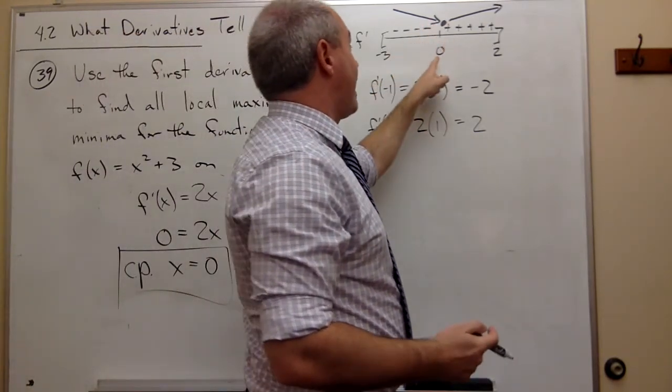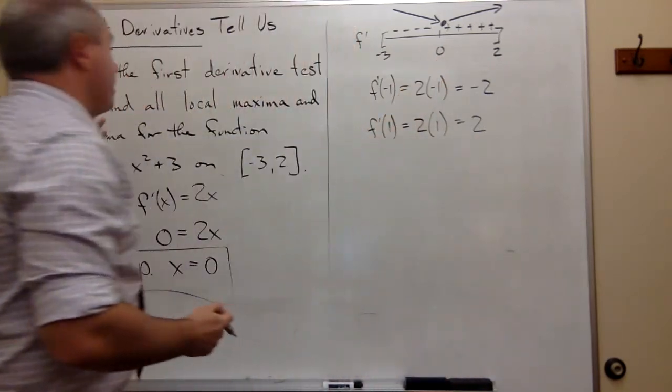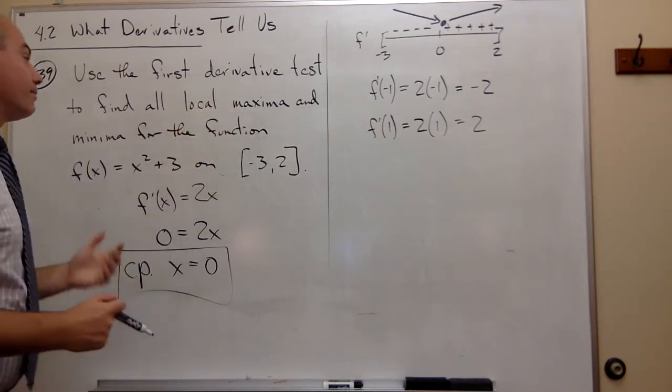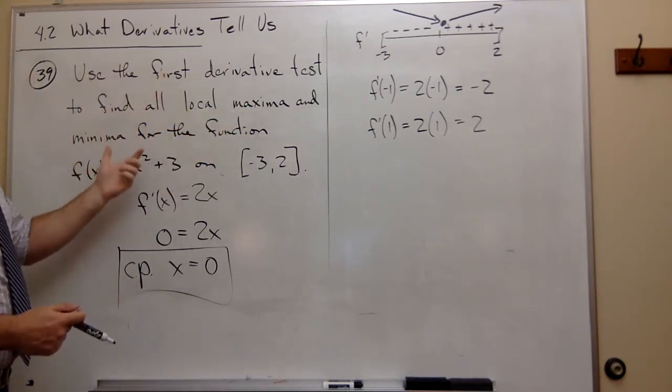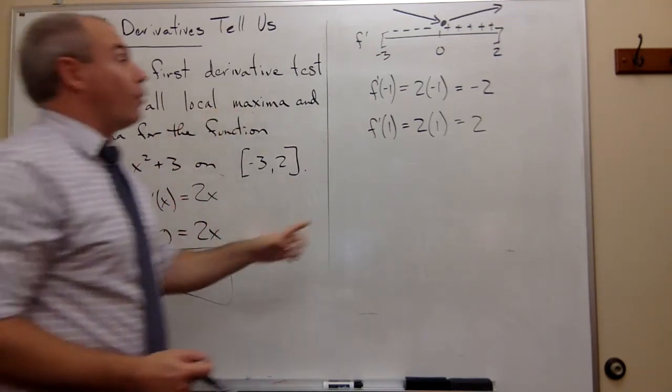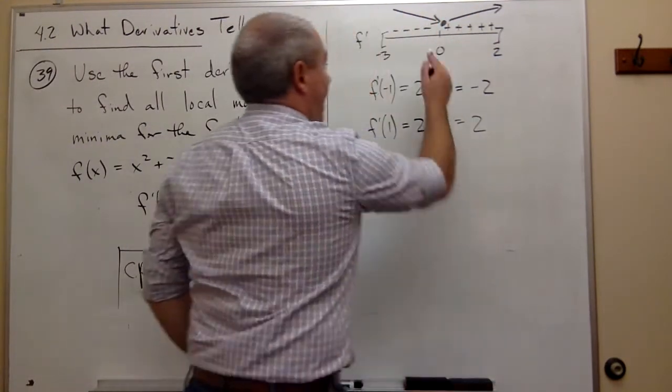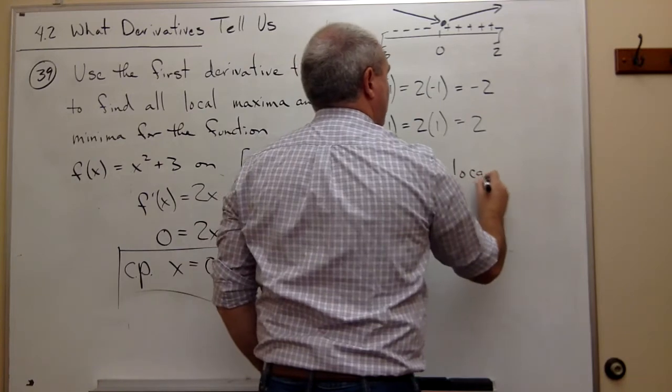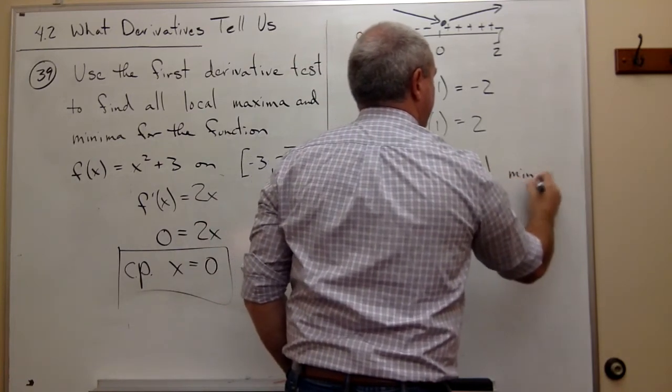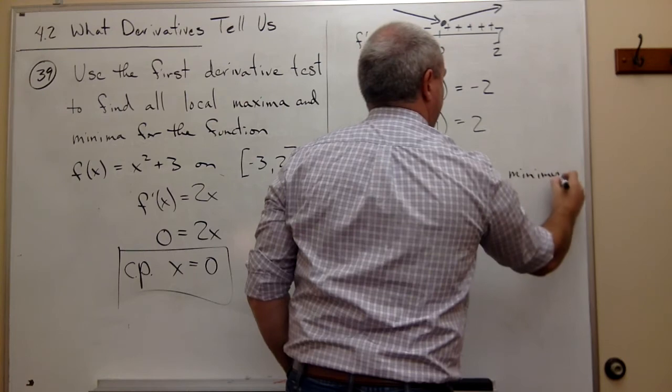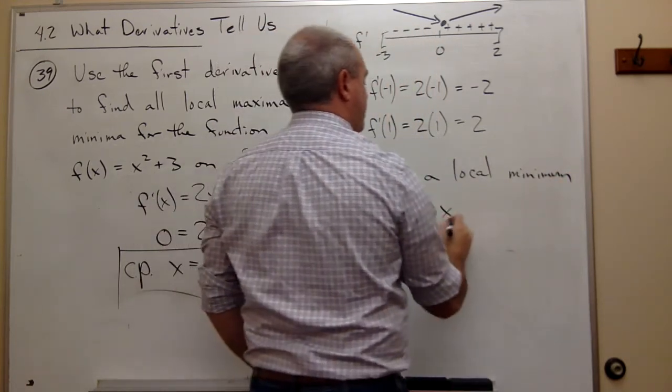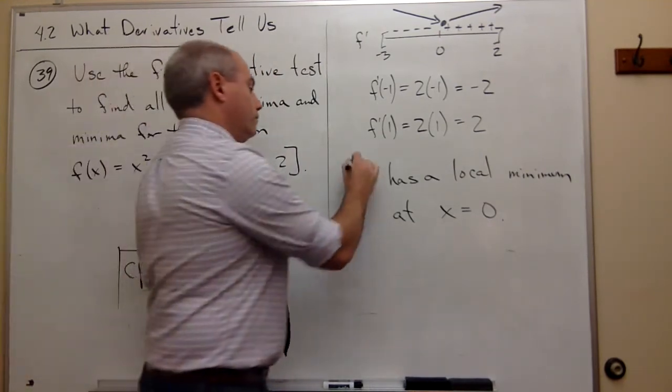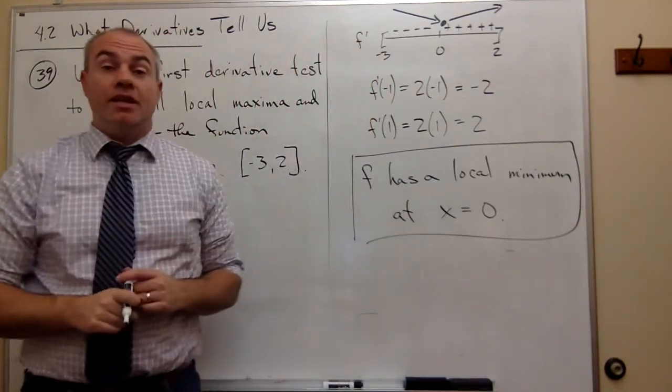We get a minimum at x = 0. We don't get any maximums in this case, at least not local maximum. So the answer to this problem is: f has a local minimum at x = 0, and it doesn't have any local maximum. That's my answer.